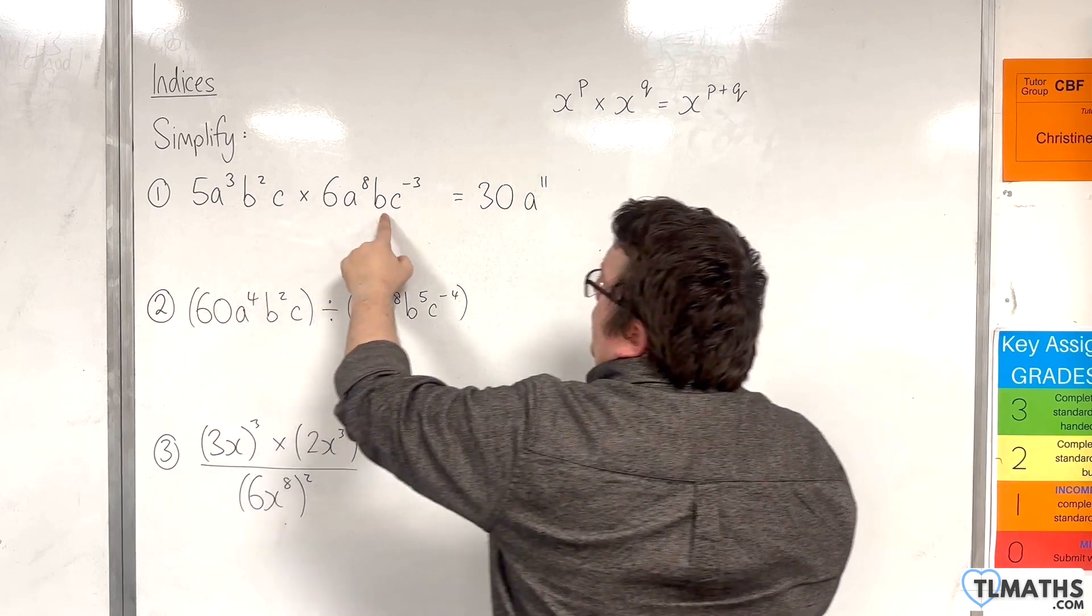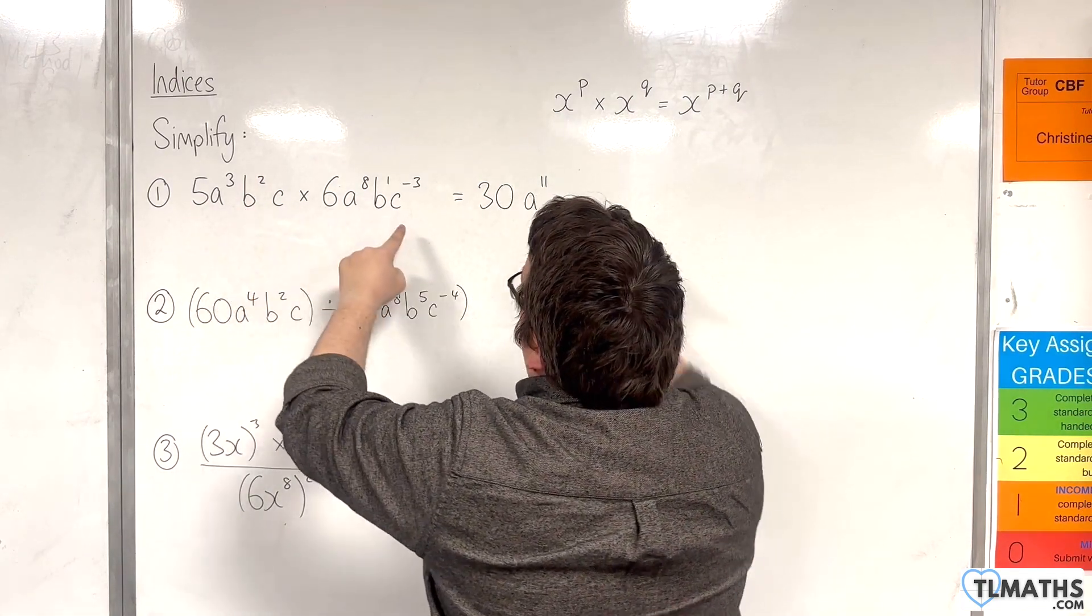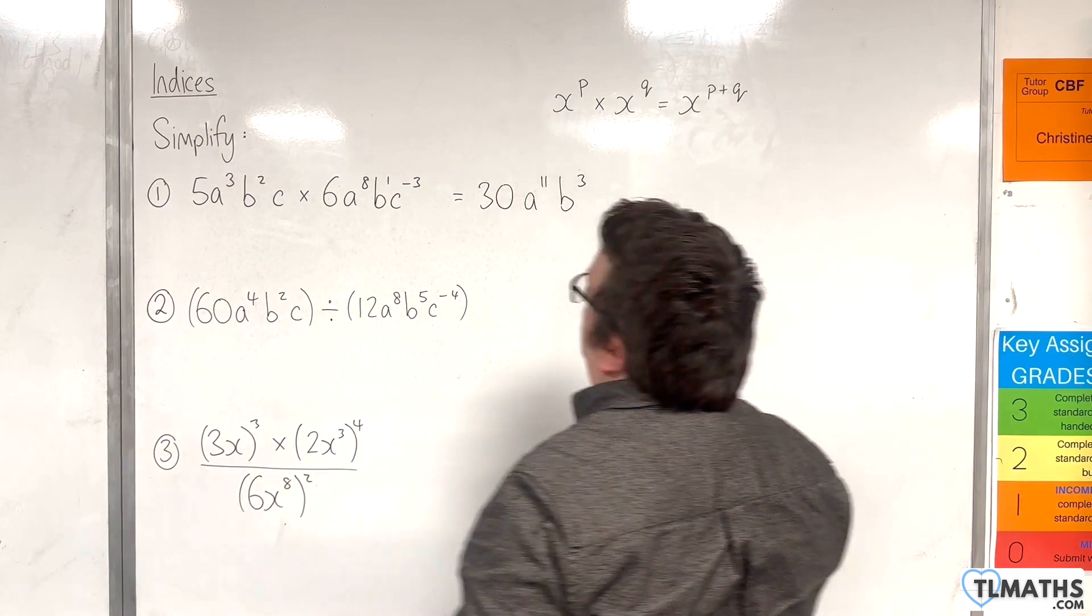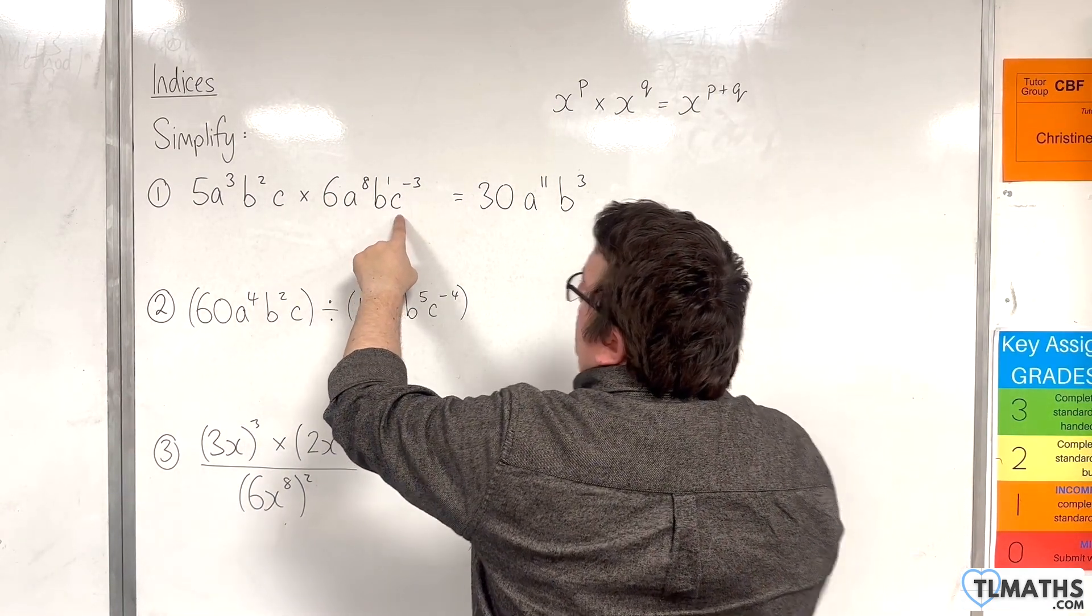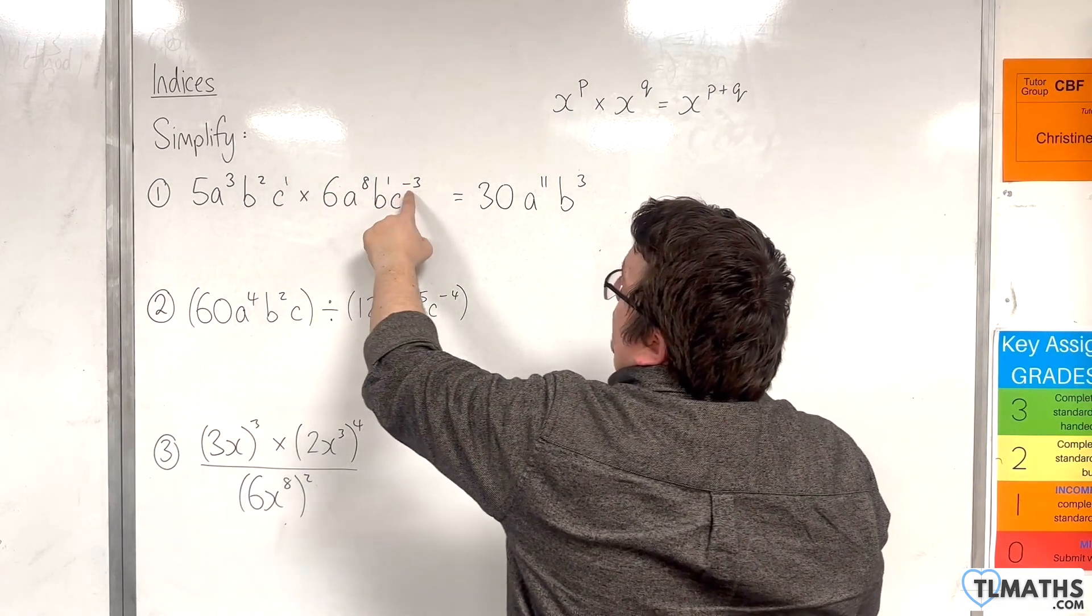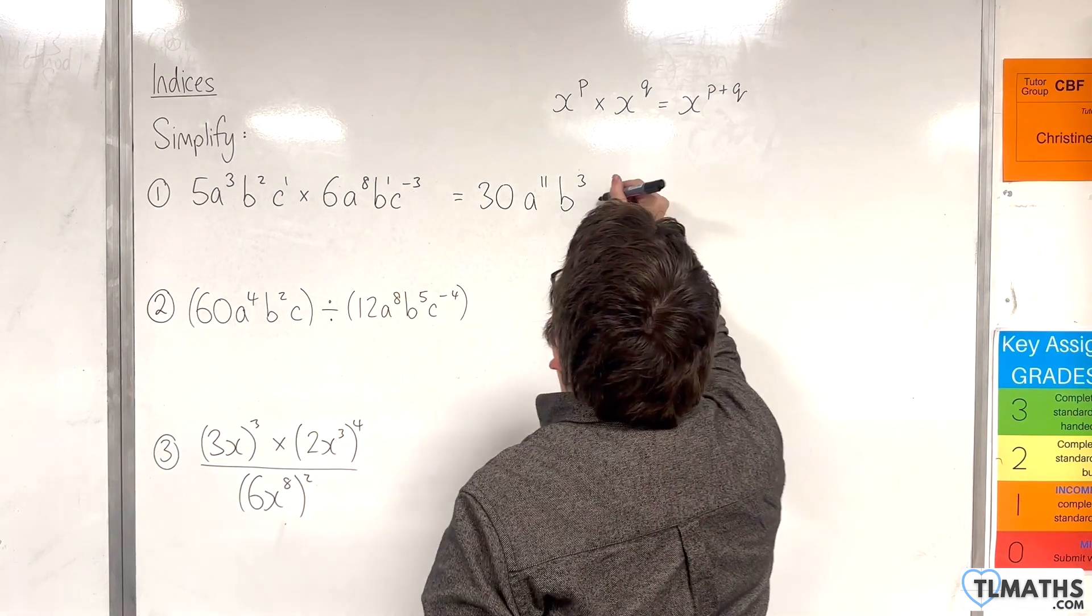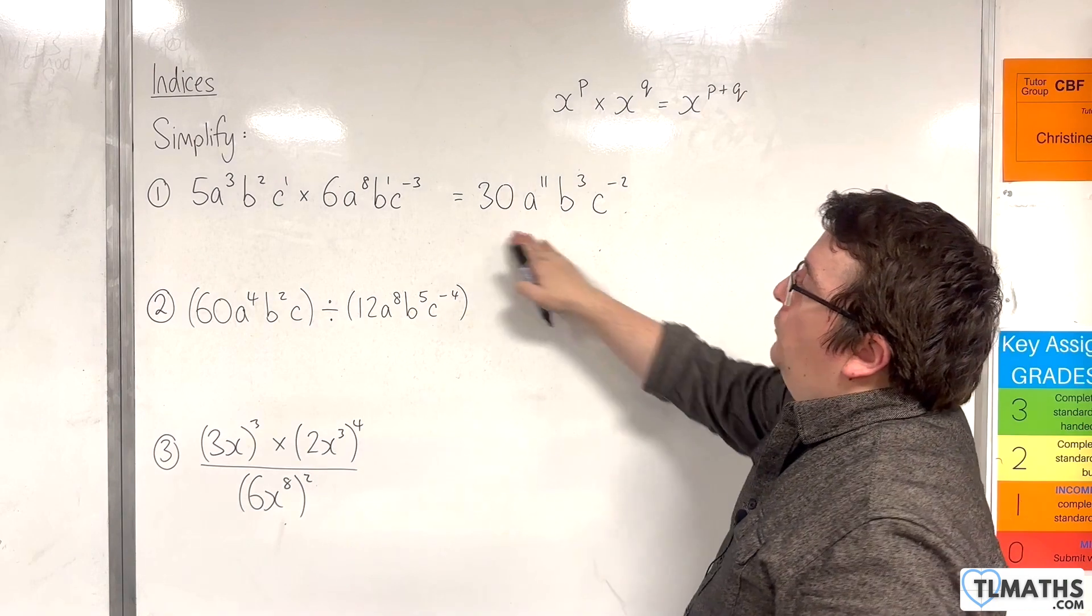We then have b squared times b. Well, that's just b to the 1. So b to the power of 2 plus 1 is b cubed. And then c times c to the minus 3. Well, that's c to the 1 times c to the minus 3. So we have 1 plus negative 3, which is minus 2. So c to the minus 2. And that's my result.